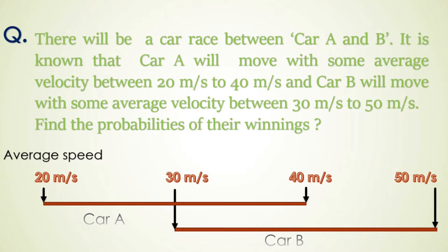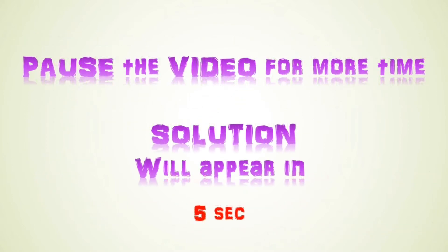Here average speed of both cars are given. Some cases are possible in which Car B will win, but some cases are also possible for Car A to win. So we have to calculate the probabilities of winnings of each car. If you have not tried this question yet, you can pause the video for more time.